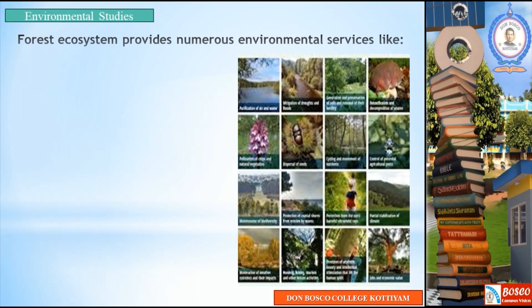A forest ecosystem provides numerous environmental services like cycling nutrients. In a forest, a producer is absorbed by the plants — the plant creates energy and nutrients. It involves producers, consumers, and decomposers, forming a nutrient cycle.